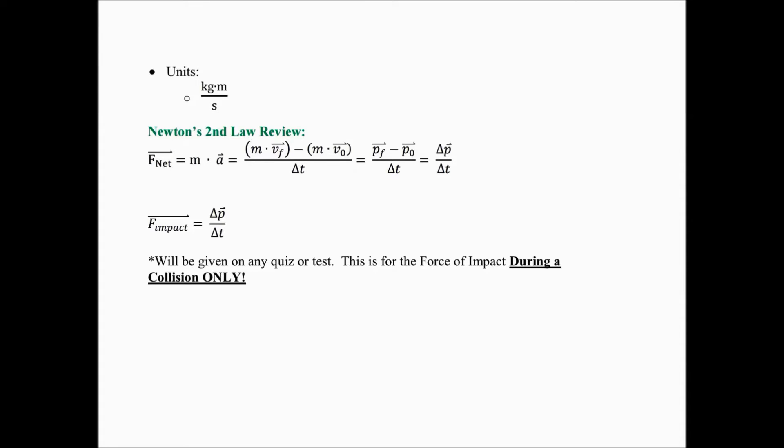Now let's talk about where momentum came from. This actually comes from Newton's second law. You know Newton's second law as mass times acceleration, but that's not actually how he originally wrote it. He originally wrote his second law in terms of momentum, and then we worked it backwards to come up with the formula F = ma. So we're going to go the other way and see how Newton originally based it off of momentum.